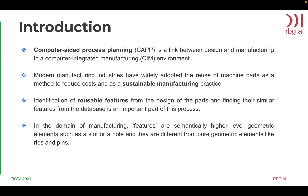Artificial Intelligence is gaining popularity in planning and optimization in all levels of the manufacturing domain. In the modern manufacturing environment, computer-aided process planning is the link between computer-aided design and manufacturing. Today's manufacturing industries have widely adopted the reuse of machine parts as a method to reduce cost and as a sustainable manufacturing practice. Identification of reusable features from the design of parts and finding their similar features from the database is a critical part in this process. In manufacturing, features are semantically higher-level geometric elements such as a slot or a hole, and they are different from pure geometric elements.